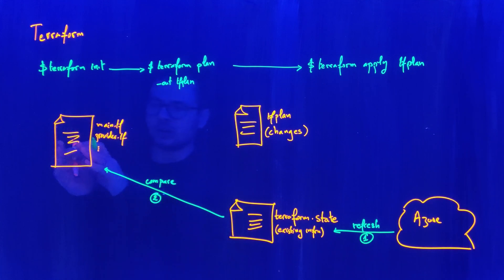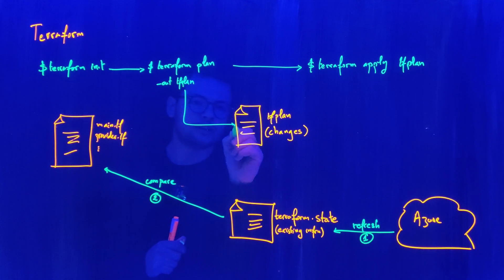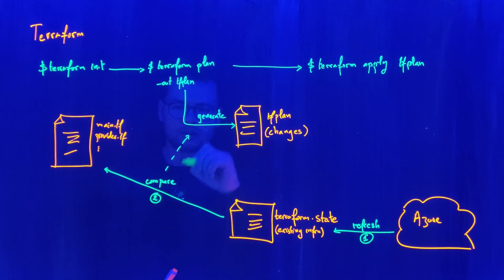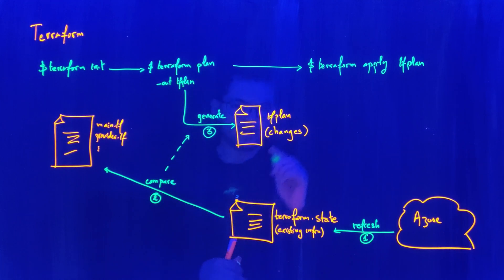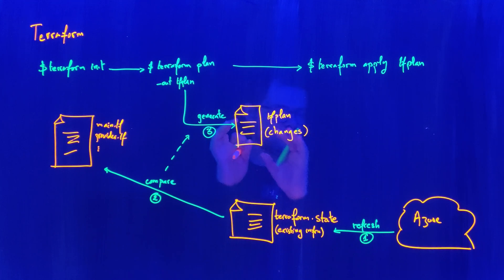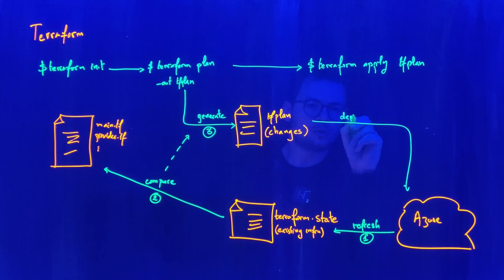The result of the compare operation — for example, adding a second subnet to a vnet — will be reflected into the tf plan file. So Terraform plan generates the tf plan based on the differences between the main tf and the Terraform state file. That is step number three. Then, when we run Terraform apply, we already have all the changes defined. We then deploy that infrastructure into the Azure cloud — and that is step number four.